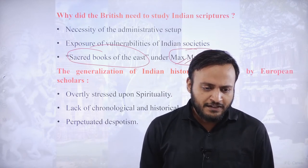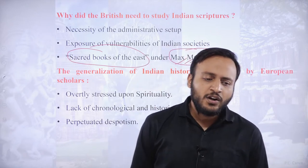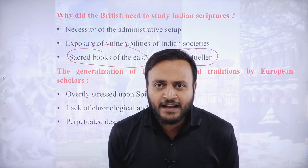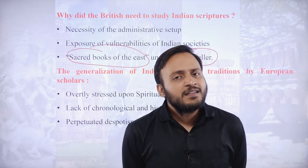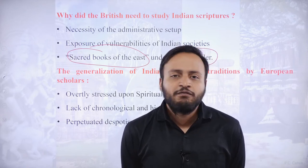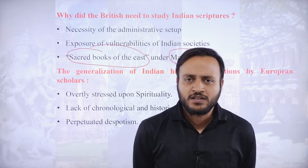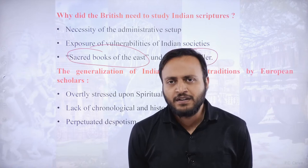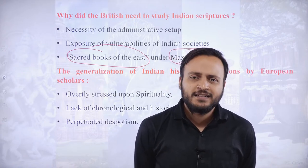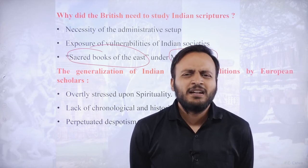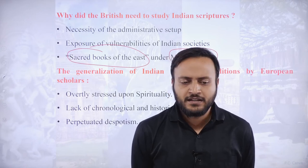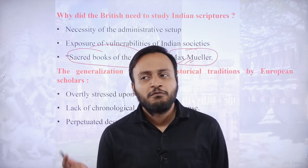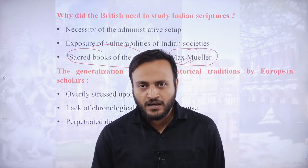Regarding Warren Hastings and the land revenue system — he was inheriting that system since the later Mughal period and did not make significant changes until Lord Cornwallis arrived. More or less, Warren Hastings followed the same pattern of land revenue as during the Mughal period.